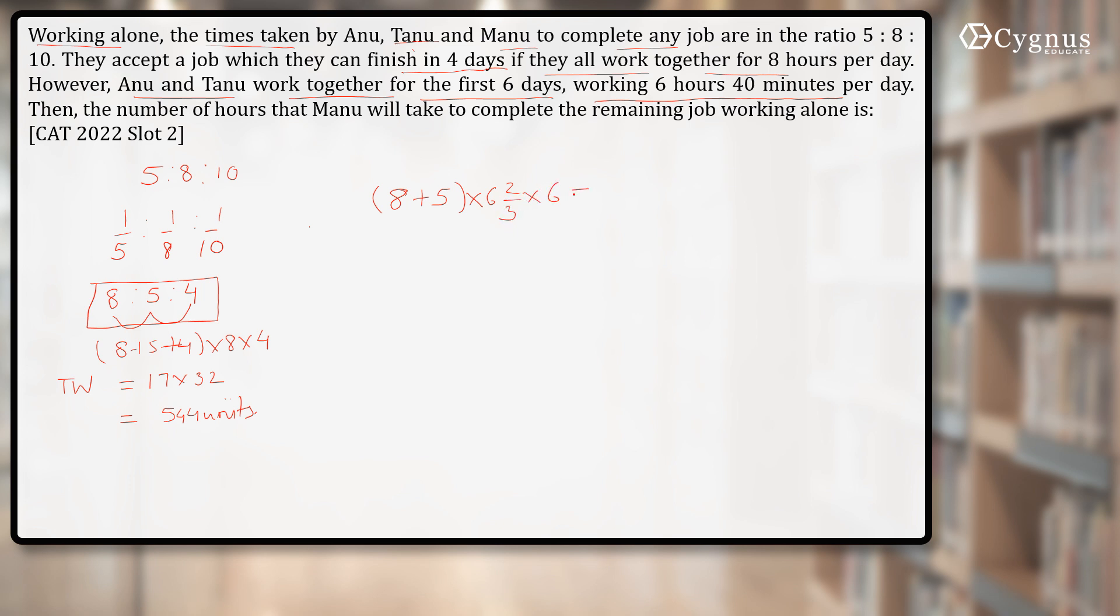In 6 days they will finish 13 into 20/3 into 6. This we cancel it out: 2 times 13 into 2 is 26, 26 into 2 is 52, so they've already finished 520 units of the work.